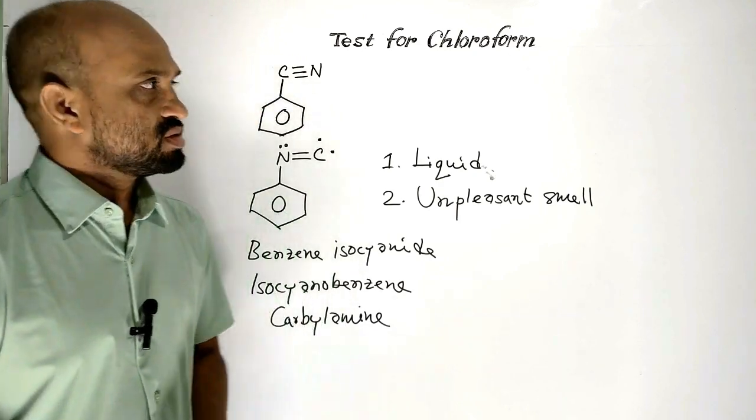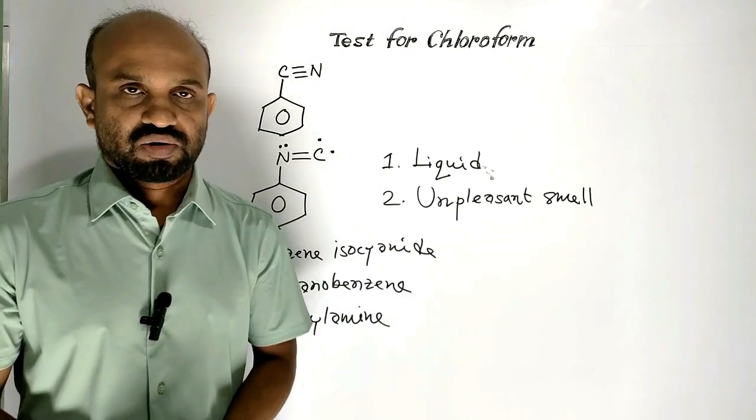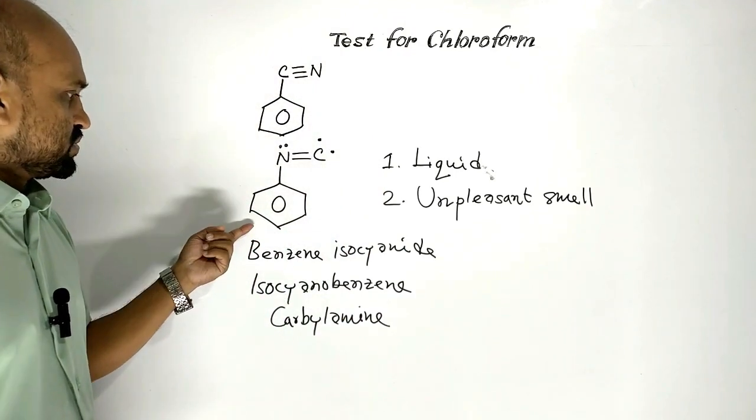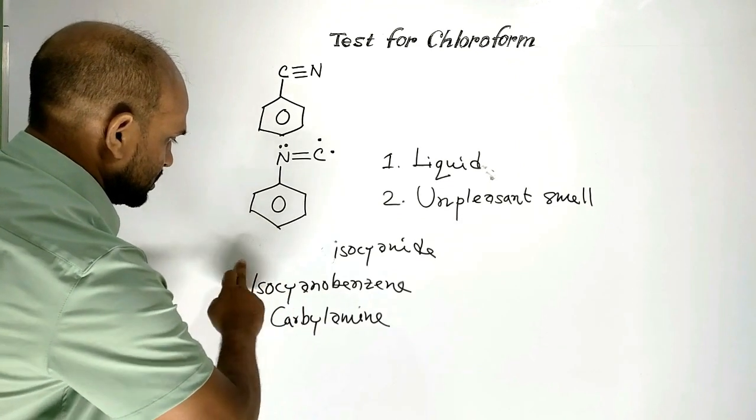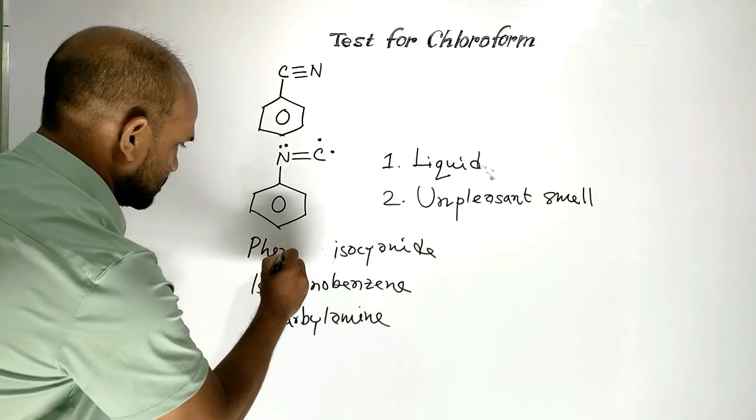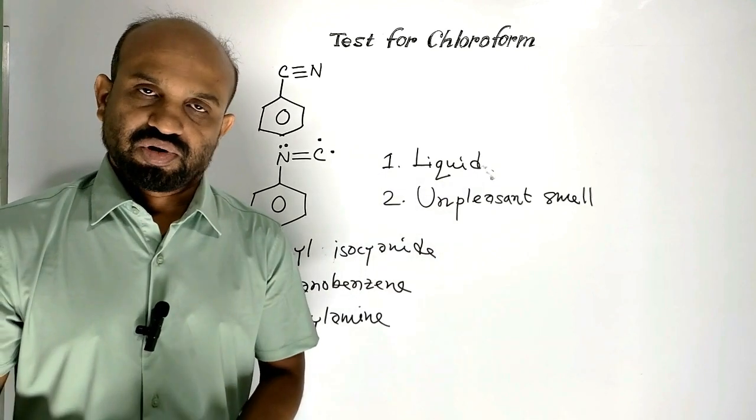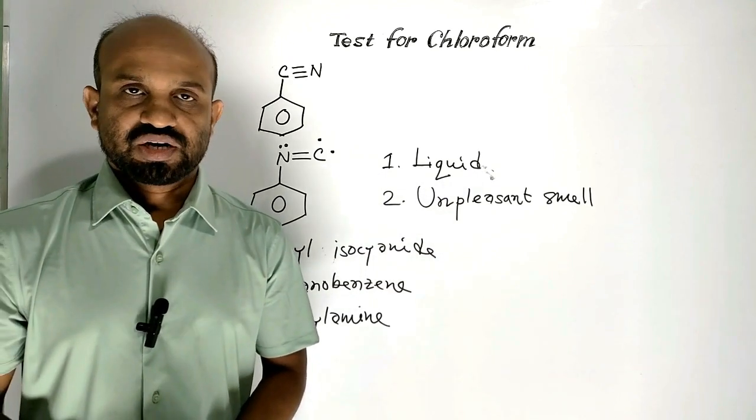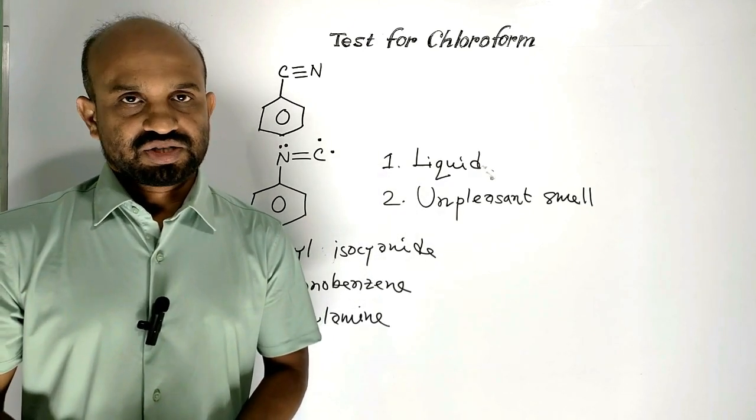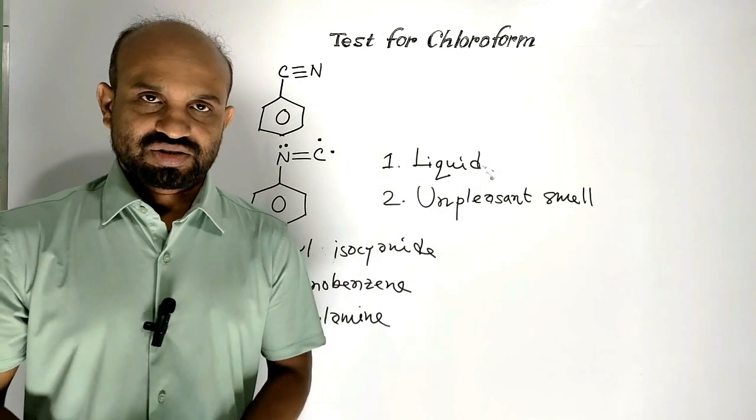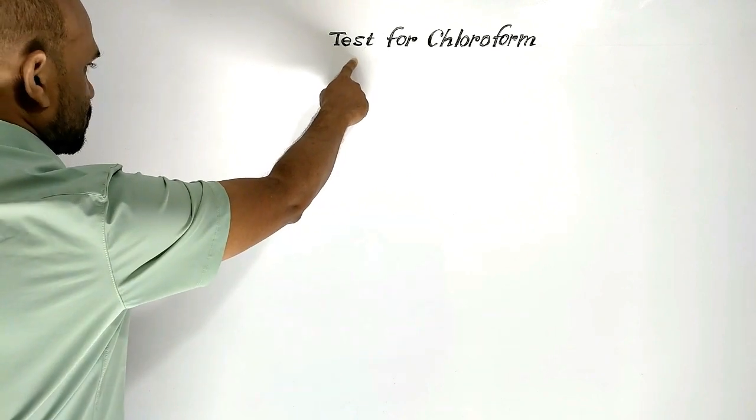Today's lesson is test for chloroform, which involves Phenyl isocyanide. Test for chloroform involves Phenyl isocyanide or Cabylamine. Today we are going to learn test for chloroform. Let's get started. Test for chloroform.